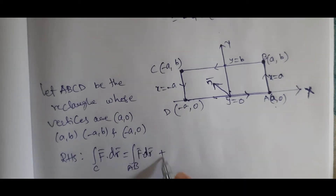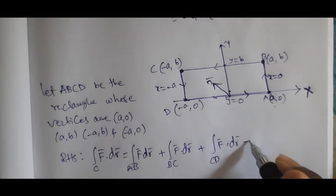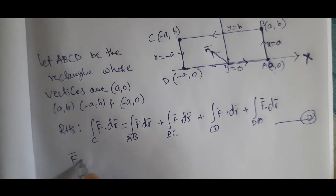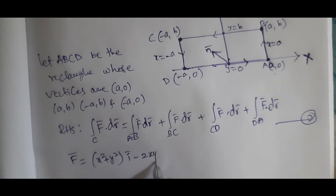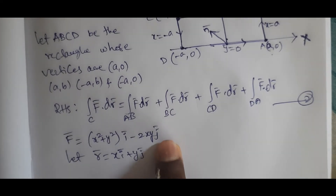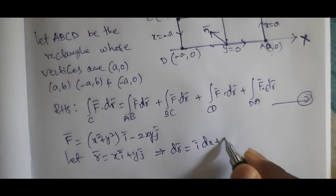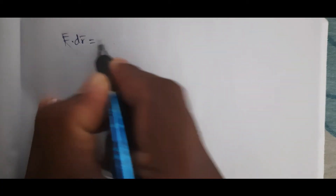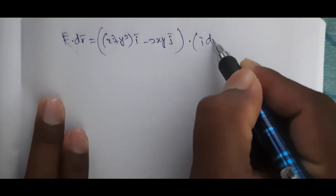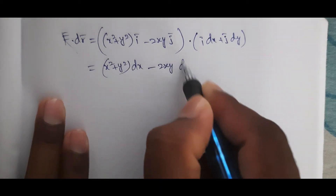LHS = ∮_C F̄·dR̄ = ∫_{AB} + ∫_{BC} + ∫_{CD} + ∫_{DA} F̄·dR̄ (equation 2). With F̄ = (x²+y²)ī − 2xy j̄ and R̄ = xī + yj̄, we get F̄·dR̄ = (x²+y²)dx − 2xy dy.